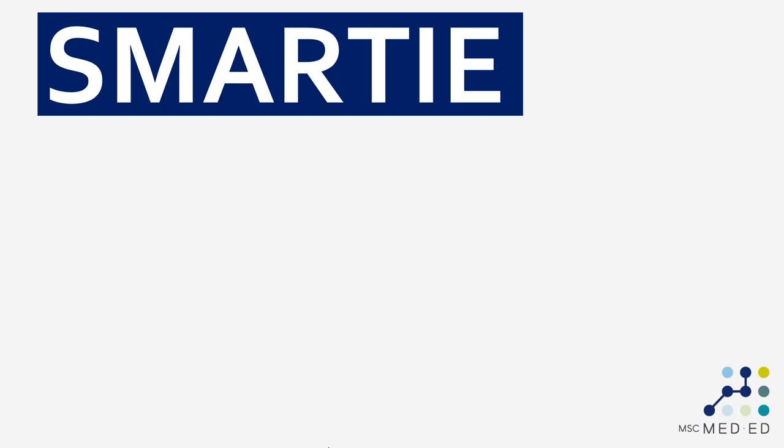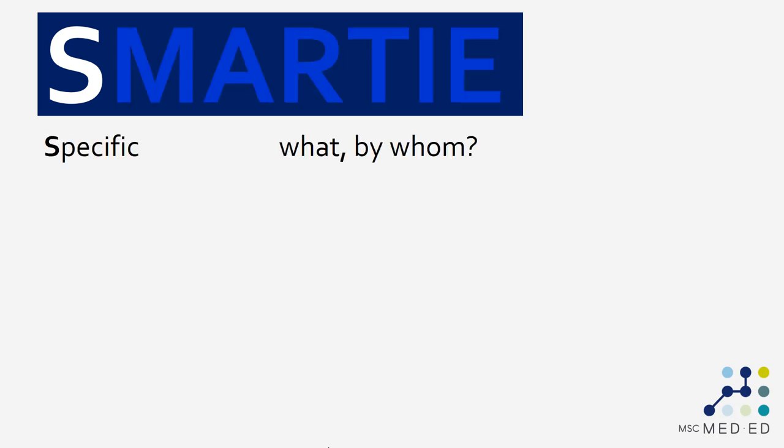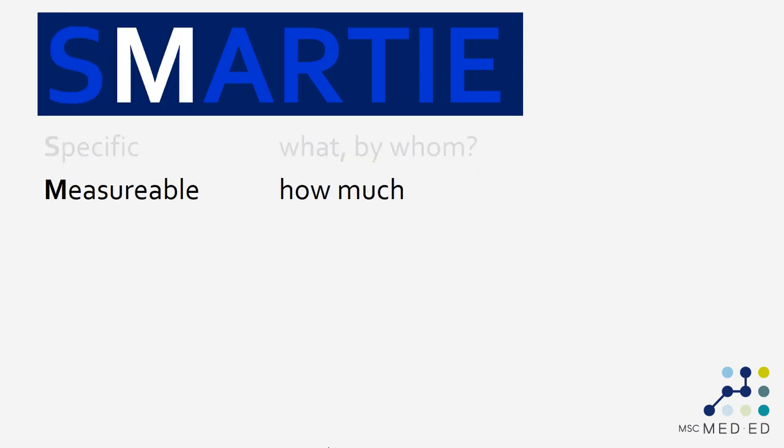Here's an acronym that's helpful when trying to organize and write your learning outcomes. It's called the SMARTY acronym. The S stands for specific — what do you want your learners to be able to do, and who are the learners that you want to do it? The M stands for measurable — how much improvement or increase in learning are you going to be looking for?